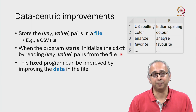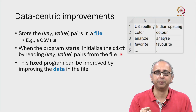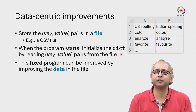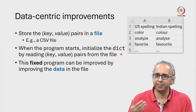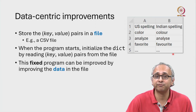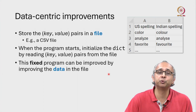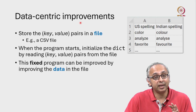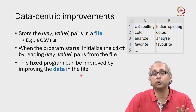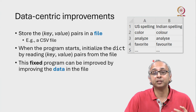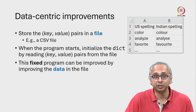What we have done is we now have a fixed program. Every time that program runs, it does exactly the same thing — it reads a file, uses it to initialize a dictionary, and then processes some words. But if we improve this file, we will improve the program. This is at the heart of data-centric improvements: you don't have to touch the code. The code is fixed, the algorithm is fixed. It's simply by improving the data that you can get a better solution, a better program.